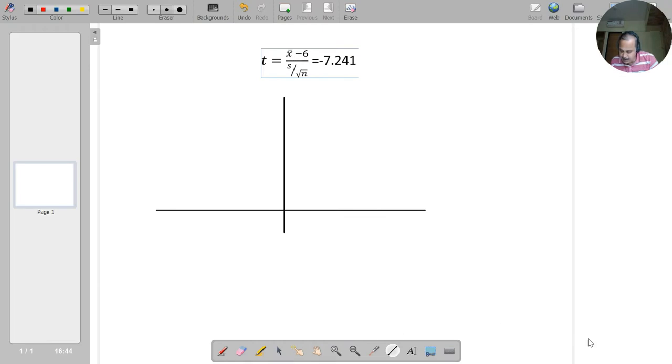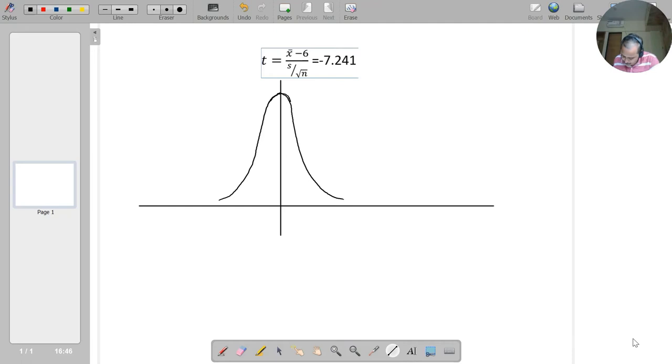So we may expect it to be this kind of curve. This is t-distribution with n minus 1 degrees of freedom. n over here is basically 30, so n minus 1 degrees of freedom will be 29.